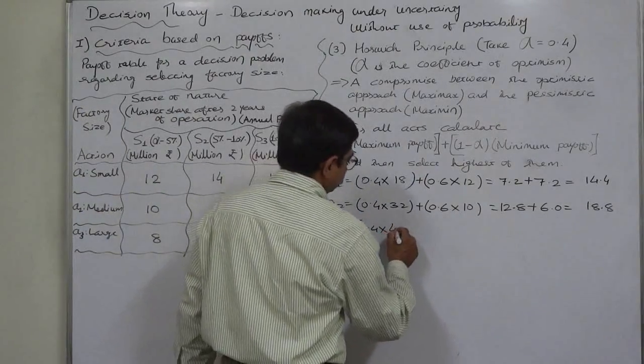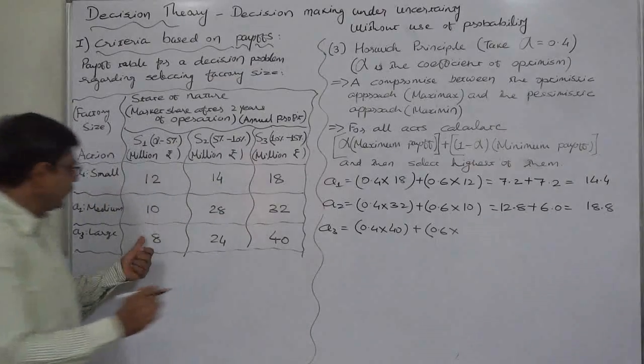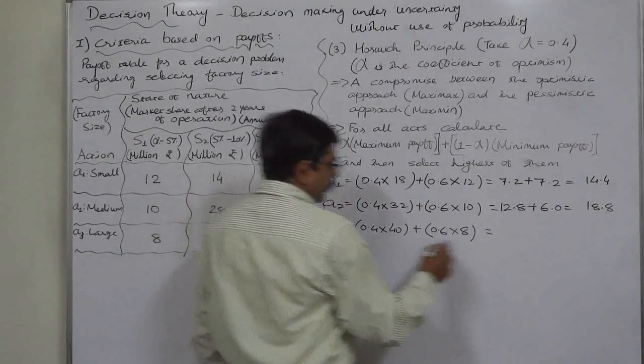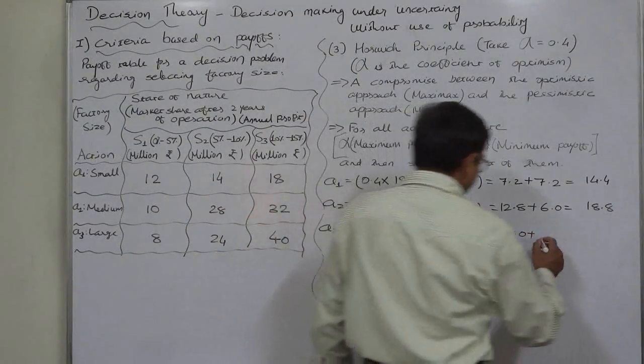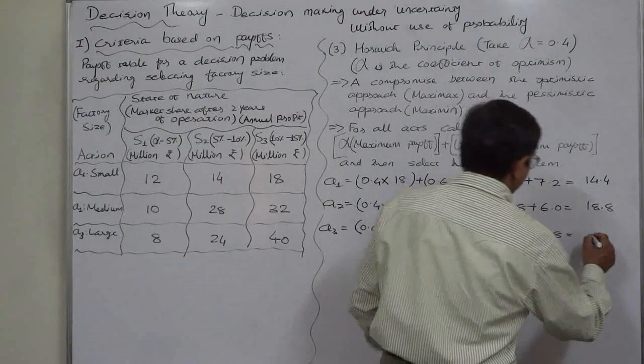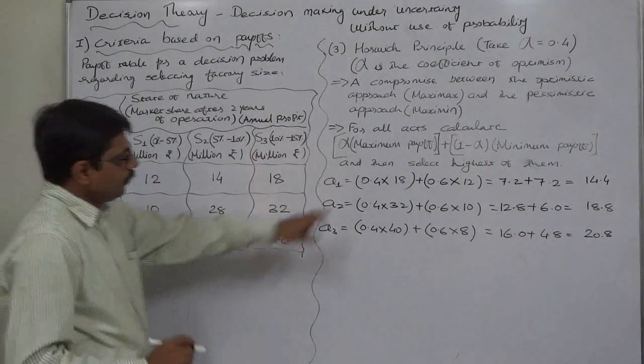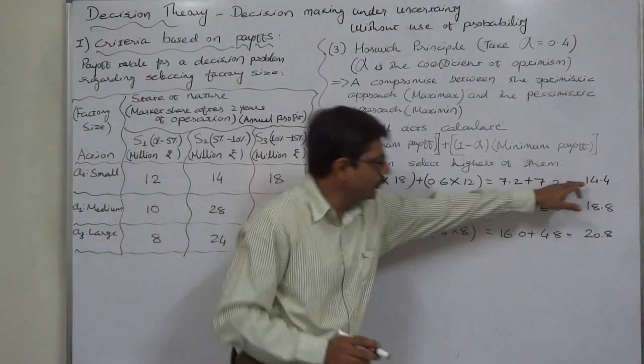For a3, the large-sized factory: alpha 0.4 into the maximum payoff of 40, plus 1 minus alpha, 0.6, into the minimum payoff of 8. This is 0.4 into 40, which is 16, plus 0.6 into 8, which is 4.8, equals 20.8.